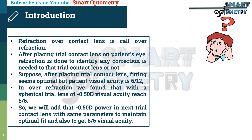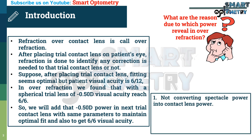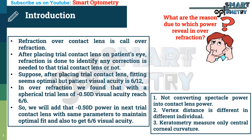Now the question is: what are the reasons due to which power is revealed in over-refraction? The most common reasons are: 1. Not converting spectacle power into contact lens power. 2. Vertex distance is different in different individuals. 3. Keratometry measures only central corneal curvature.